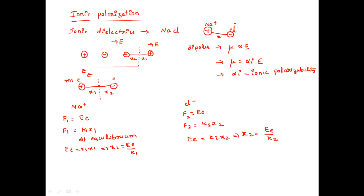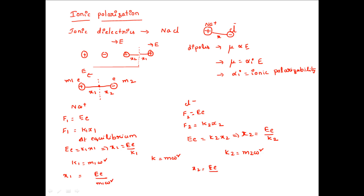Let M1 be the mass of the sodium ion and M2 be the mass of the chlorine ion. There is a relation between the force constant, mass, and frequency: K = M·ω². So K1 = M1·ω² and K2 = M2·ω². Therefore, x1 = eE / (M1·ω²) and x2 = eE / (M2·ω²).